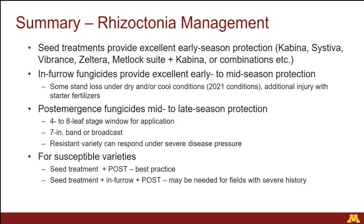Seed treatments offer early season protection, in-furrow fungicides early to mid-season, and post-emergence fungicides mid to late season, depending on how much rain you get in July and August. If you have a susceptible variety, the best thing to do is a seed treatment followed by post-emergence application. But if you have a field you're rotating constantly with soybeans and corn, you have to do an in-furrow application on top of everything else to get a decent yield.